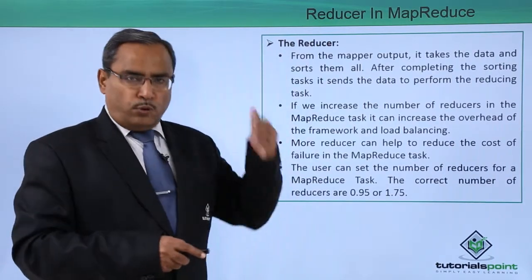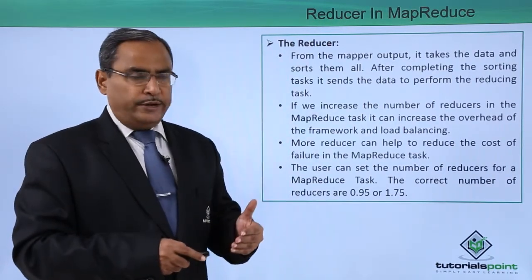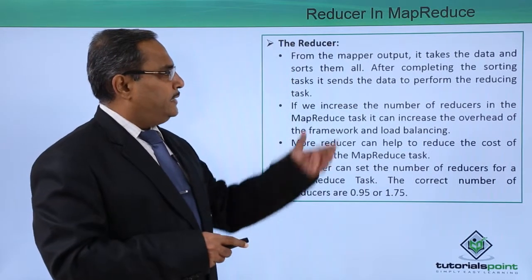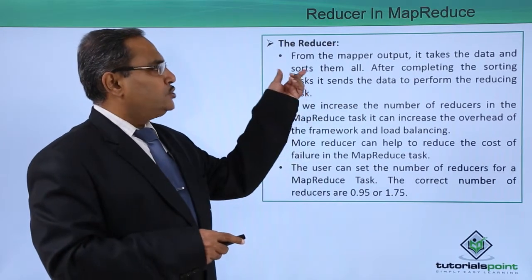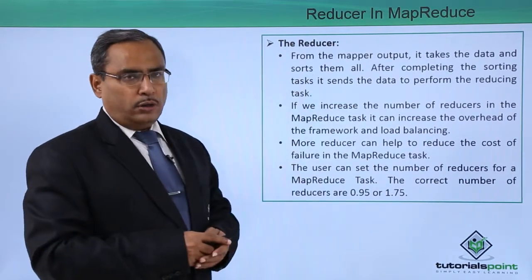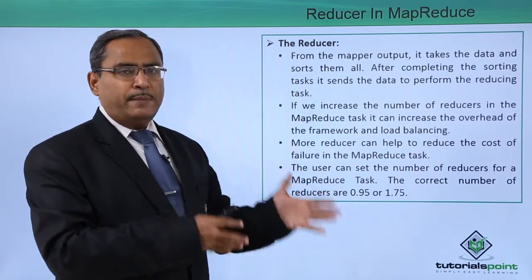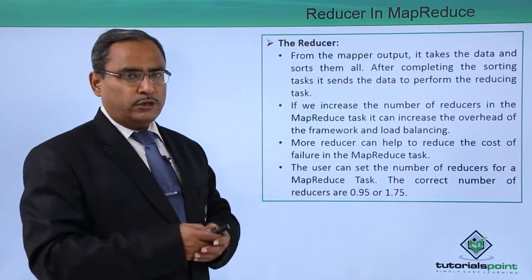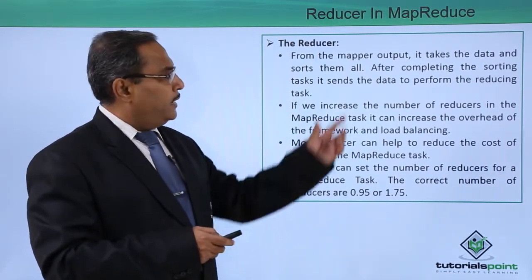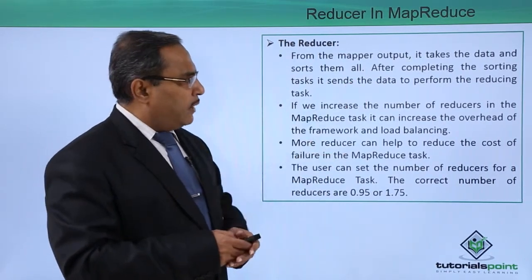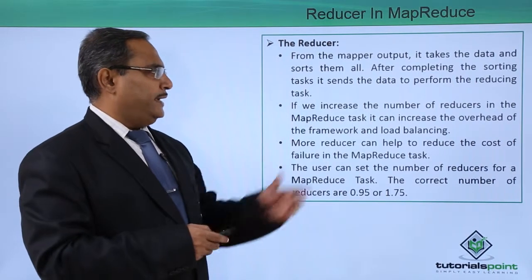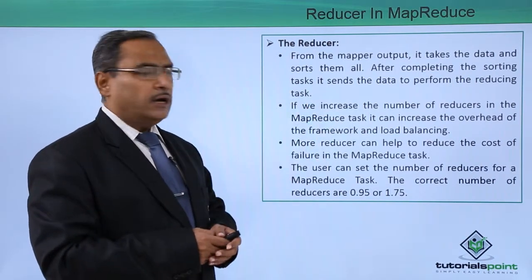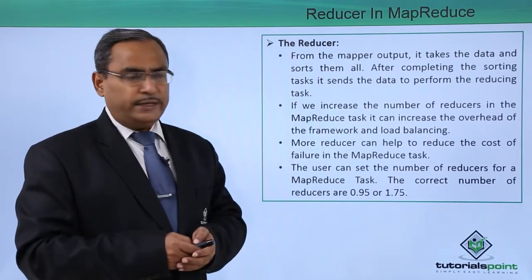Let us go into more detail about the reducer. From the mapper output, it takes the data and sorts it all. So from the mapper, it takes the key-value pairs and goes for the sorting. And after completing the sorting task, it sends the data to perform the reducing task.